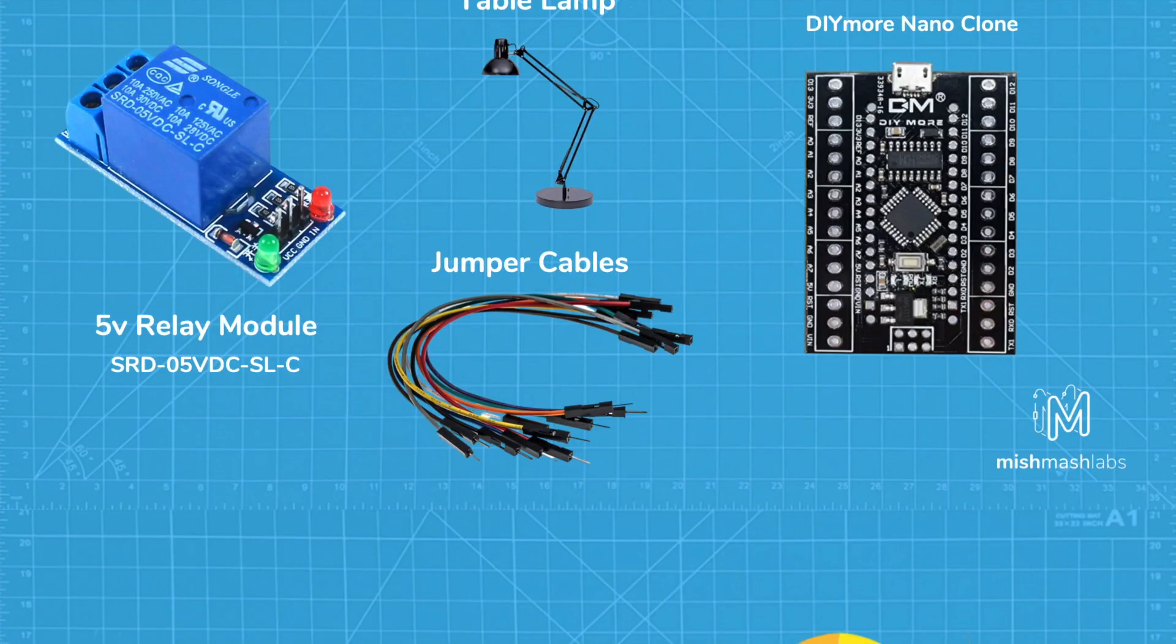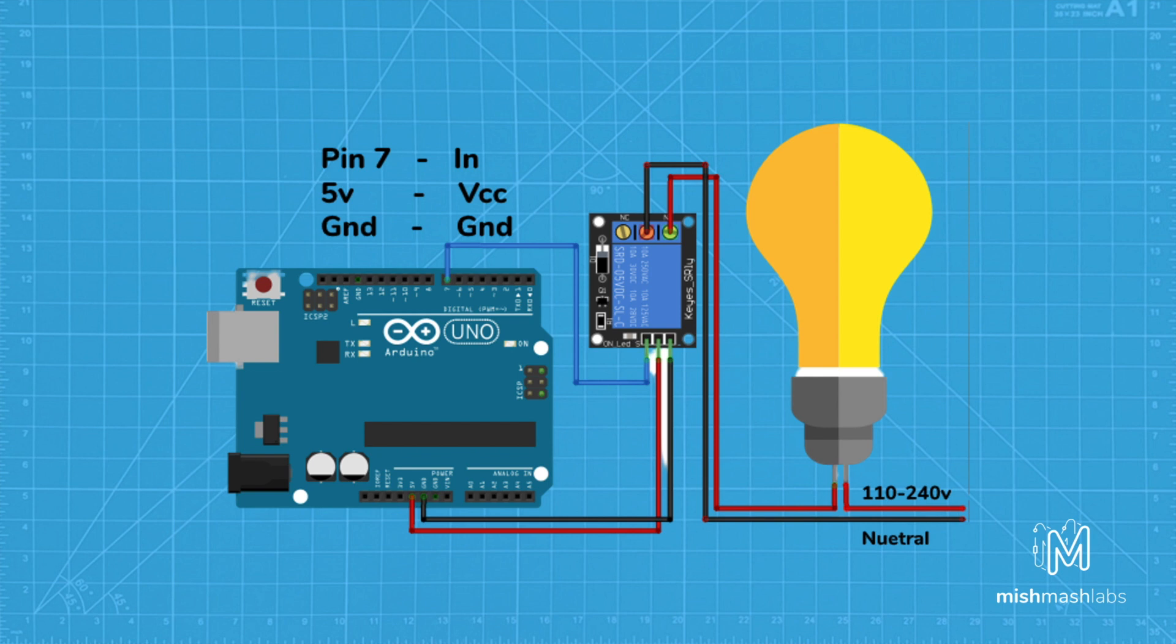The wiring diagram itself is relatively simple. You connect ground to ground, 5V to VCC and the control pin for the signal is to pin 7 on the Arduino. On the high voltage side, we're going to split the live wire and connect one to common and one to normally open.